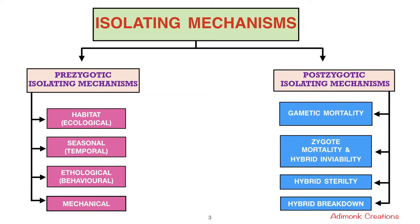Under pre-zygotic isolating mechanisms there are four different mechanisms: habitat or ecological isolation, seasonal or temporal isolation, ethological or behavioral isolation, and mechanical isolation. Under post-zygotic isolating mechanisms there are gametic mortality, zygote mortality, hybrid inviability, hybrid sterility, and hybrid breakdown.